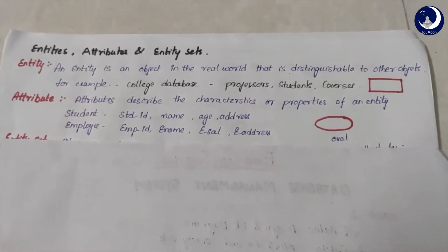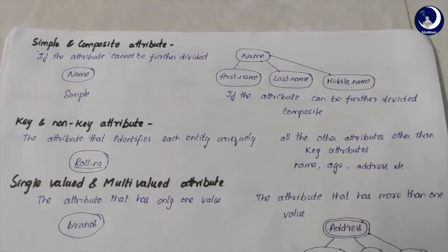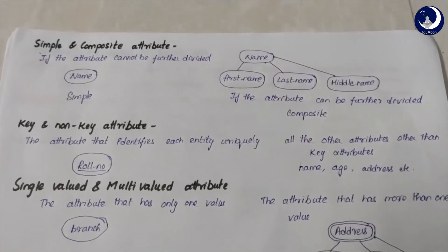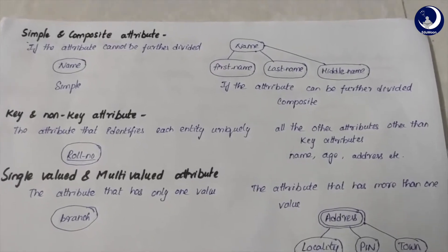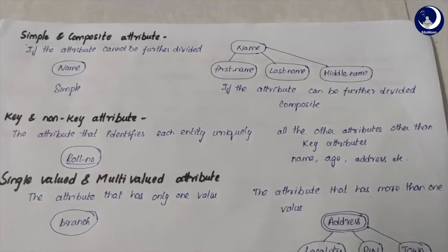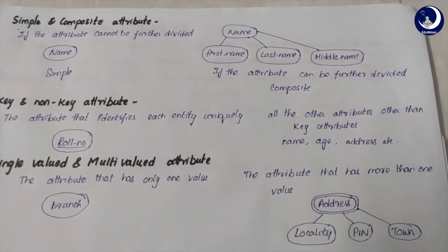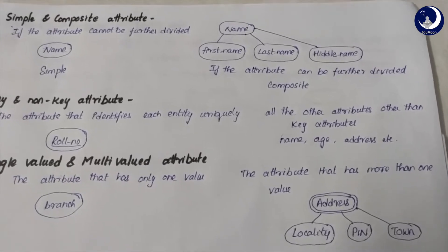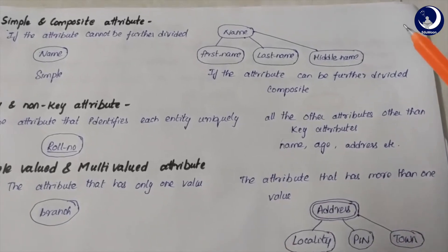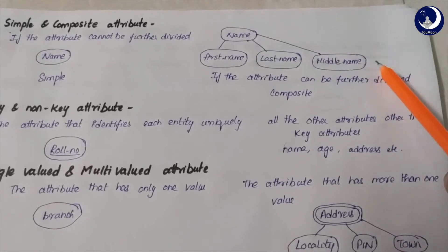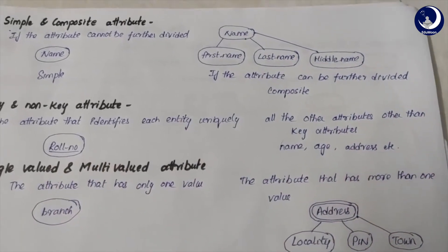We have three basic classifications of attribute types. The first is simple and composite attributes. If an attribute can be further divided into sub-attributes, it is called a composite attribute; if it cannot be divided, it is a simple attribute. For example, the name of a student can be a single attribute, or it can be divided into first name, last name and middle name — making it composite. When transforming to a table, we do not include a column called 'name'; instead we have only three columns: first name, last name and middle name.